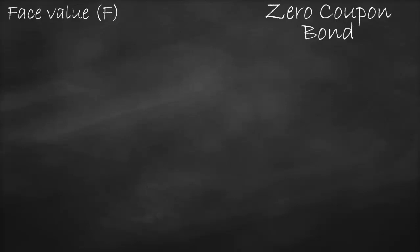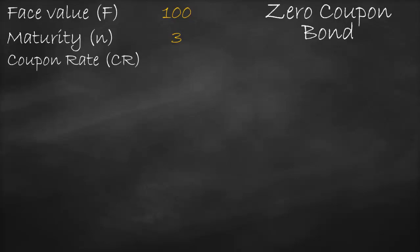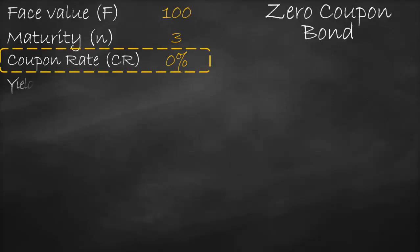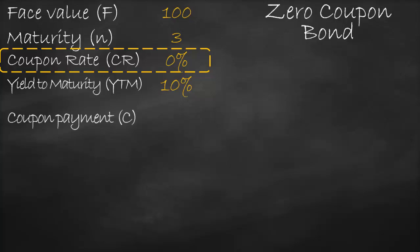Let's get a numerical example. Let's assume that we have a face value of 100, a maturity of three years, and a coupon rate of zero percent because it's a zero coupon bond. They don't distribute any coupon payments, and the yield to maturity is 10 percent.